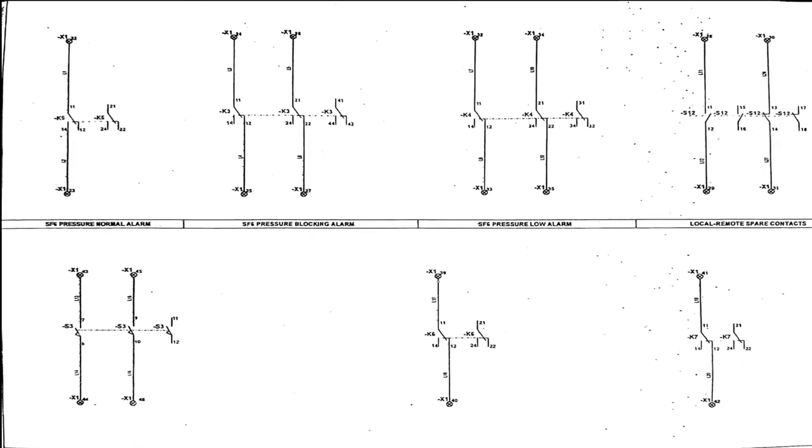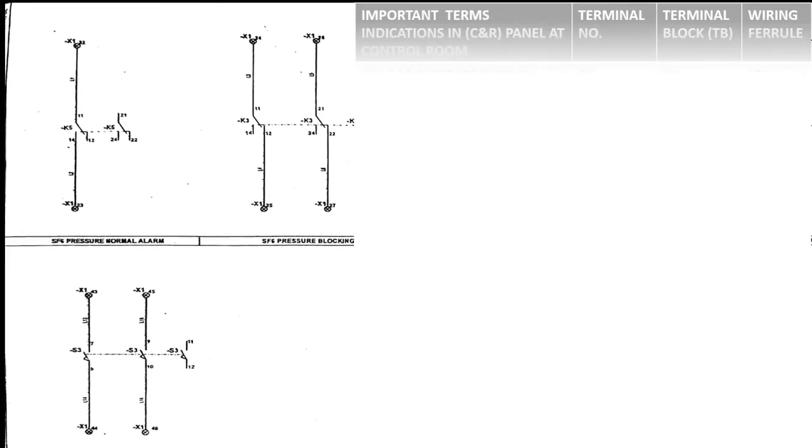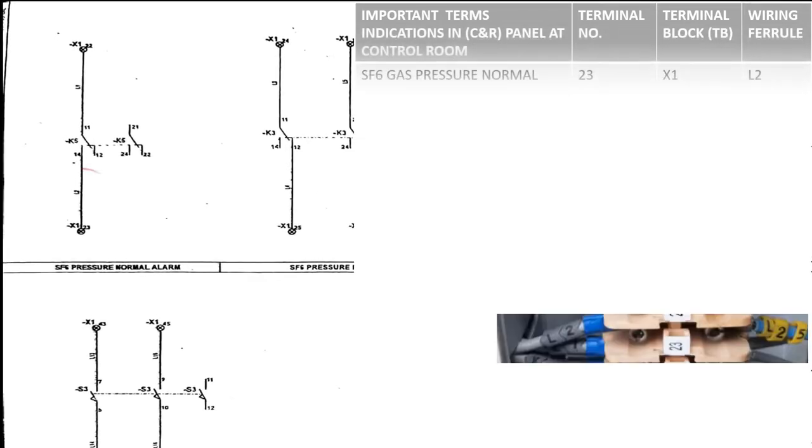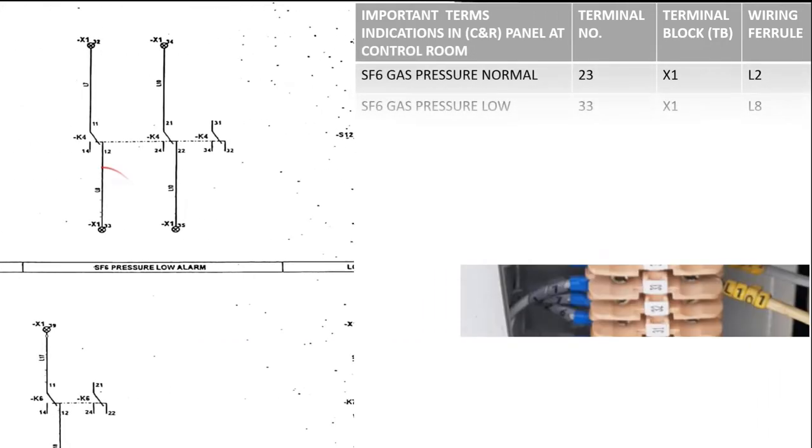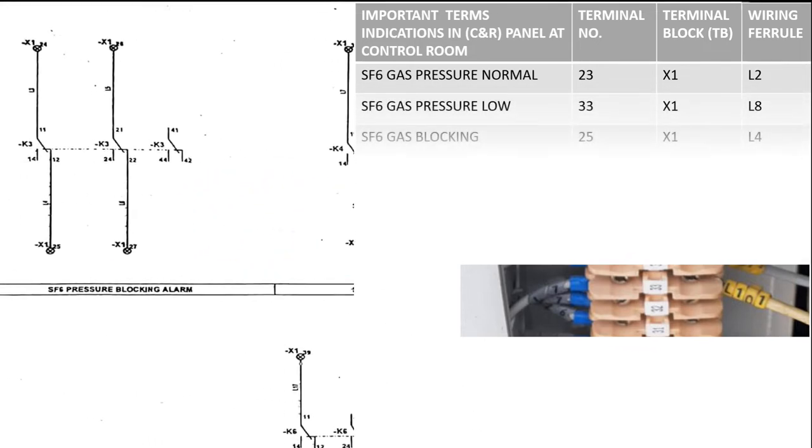Now we will see indication wiring taken from circuit breaker to the control room. For SF6 gas pressure normal, it will be taken from terminal 23 TBX1 ferrule L2. SF6 gas pressure low terminal 33 TBX1 ferrule L8.